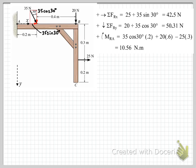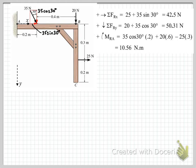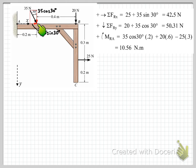Now we can write out our equations. Summing force components in the X direction: we have the 25 Newton force in the positive X direction, plus the X component of our 35 Newton force, 35 sin 30 — giving us 42.5 Newtons. Considering force components in the Y direction: we have our 20 Newton force acting in the positive Y direction — downwards being positive — plus the vertical component 35 cos 30, giving a total of 50.31 Newtons.